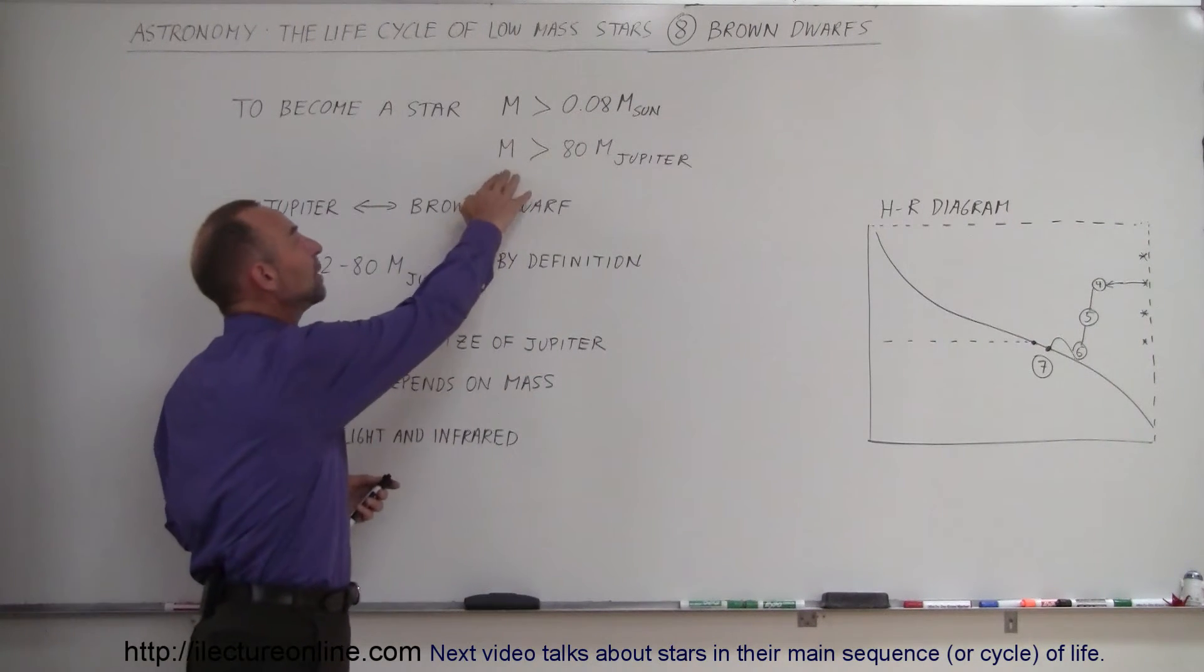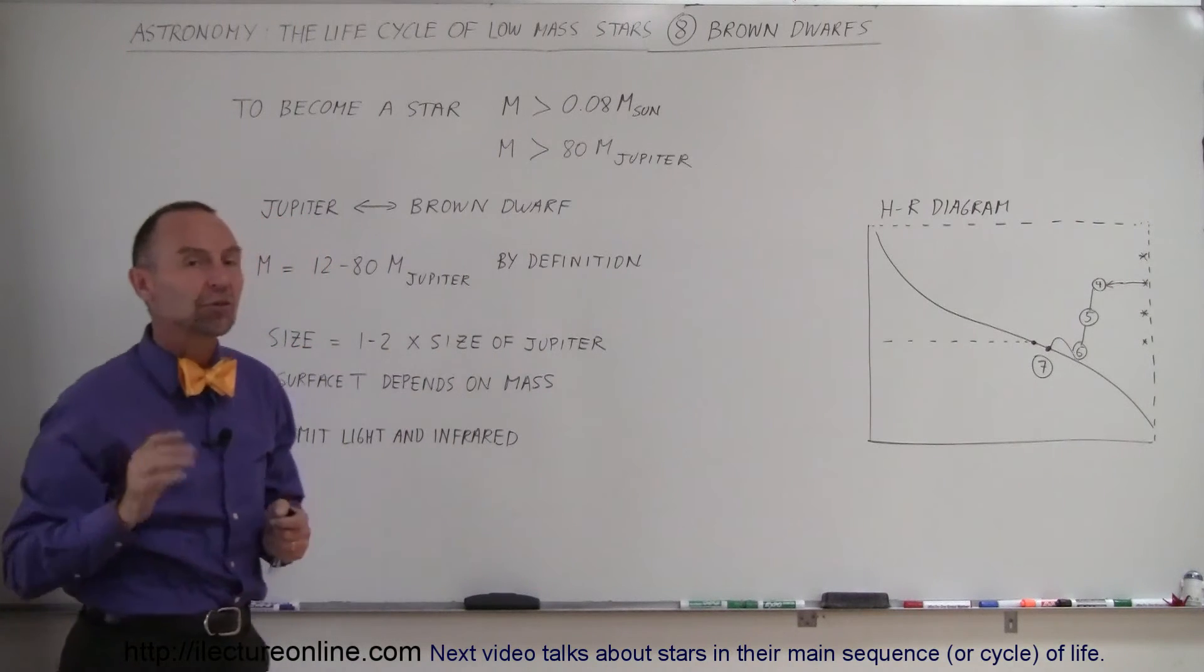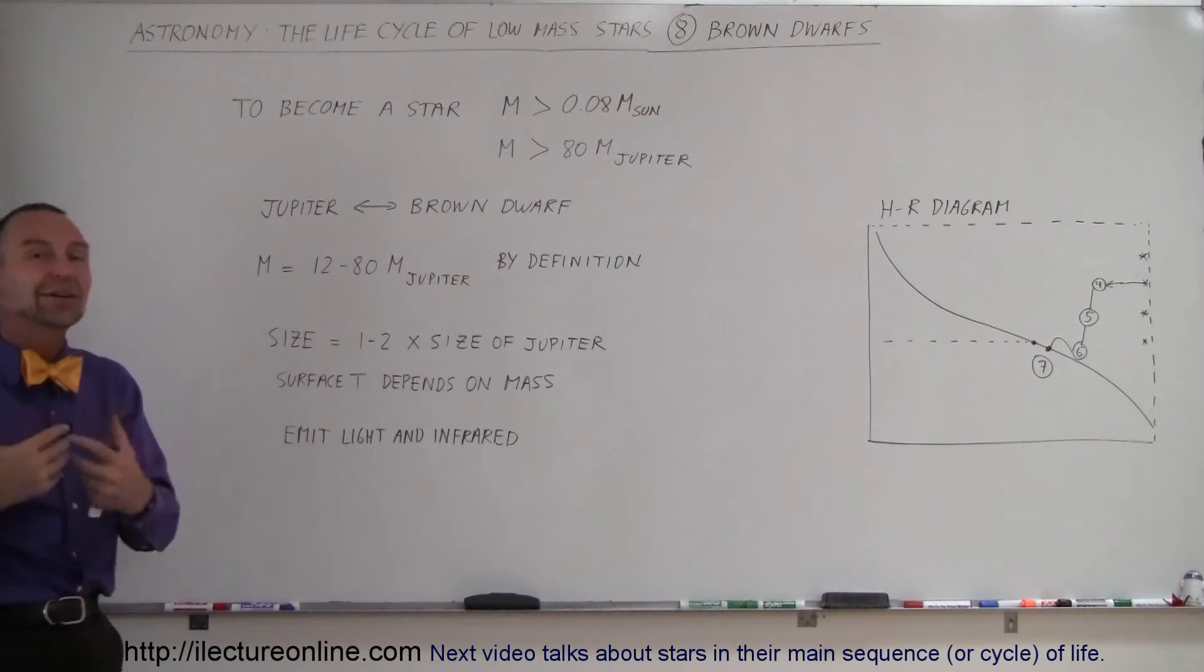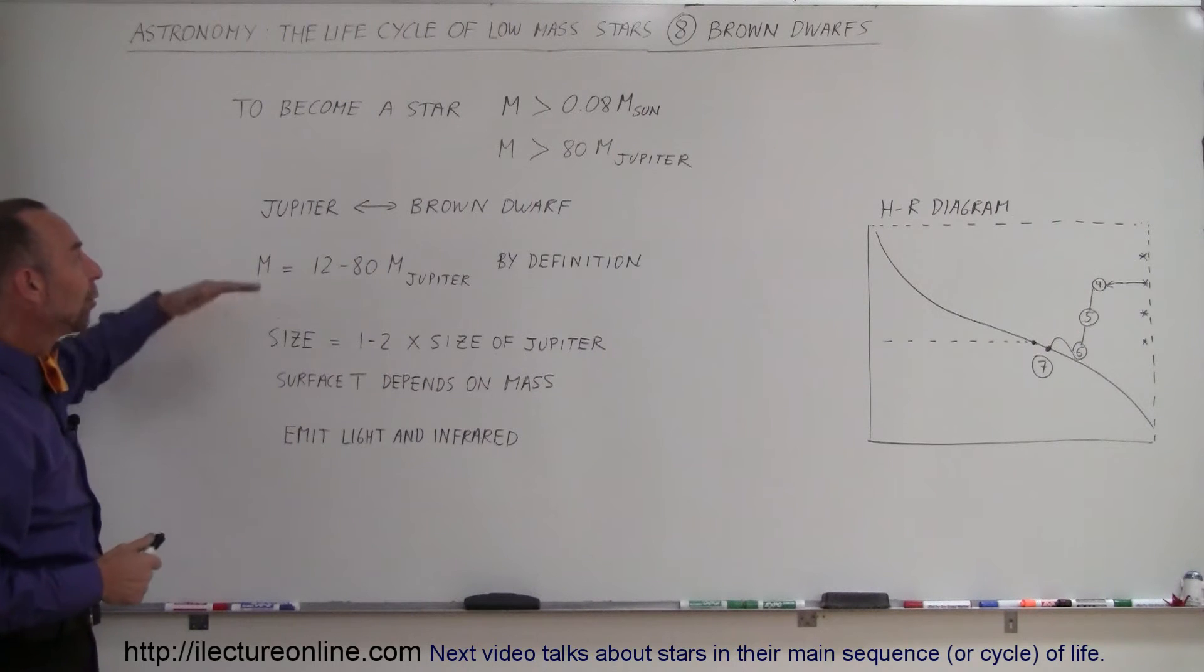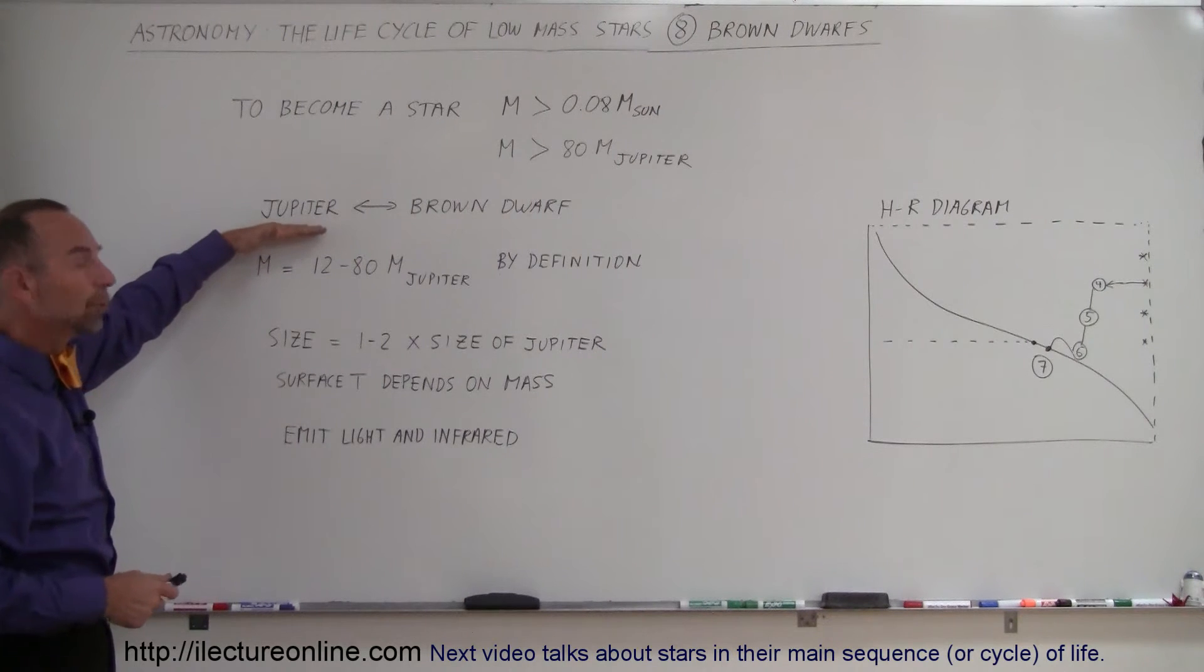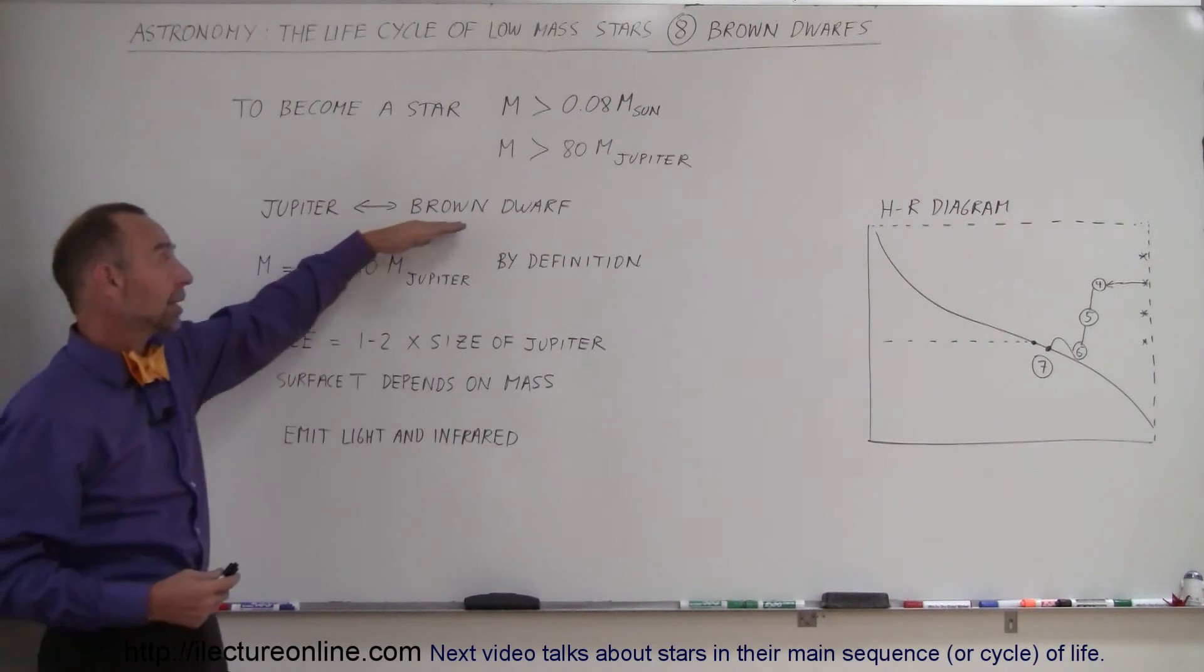That also means the mass must be at least 80 times the mass of Jupiter. Jupiter is not nearly large enough to become a star itself. So what's the difference between something like Jupiter, which we call a planet, and something like a brown dwarf?